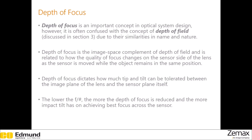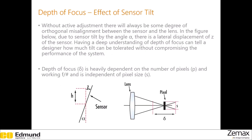Depth of focus tells you how the quality of the focus changes with the tip and tilt of the sensor, while keeping everything in the object space the same. The effect of depth of focus magnifies when using low F numbers. You need to realize that there will always be some degree of misalignment between the imaging lens and the sensor. What a good lens designer needs to know is how much of this tilt can be tolerated while maintaining an acceptable level of performance.